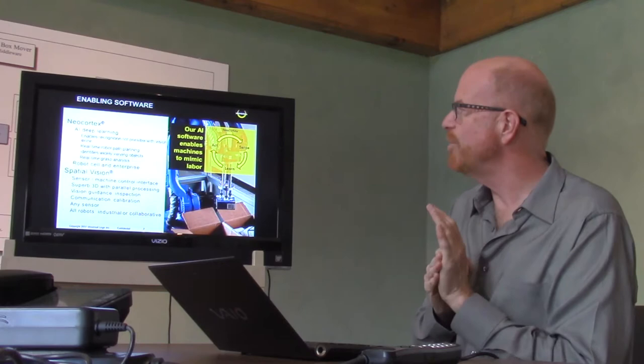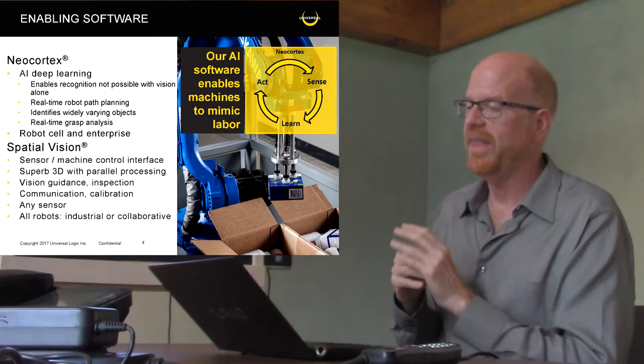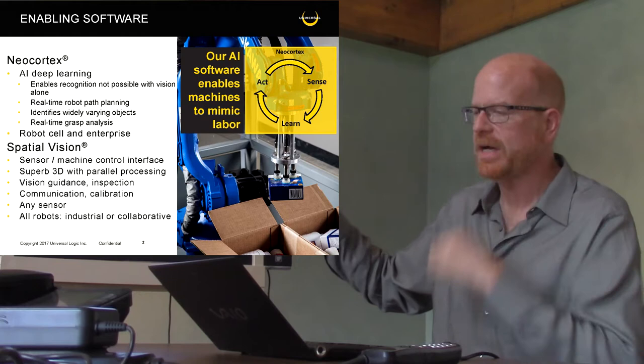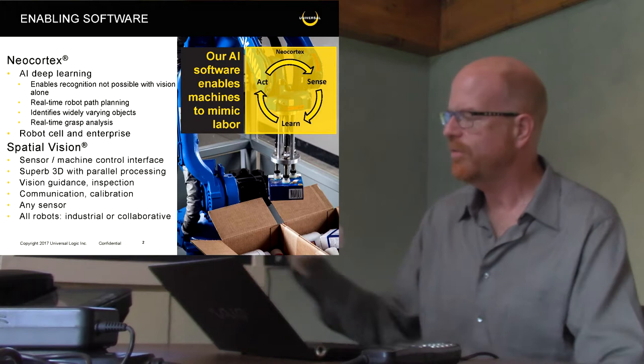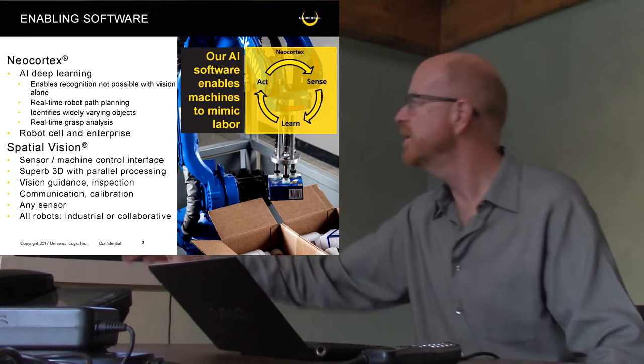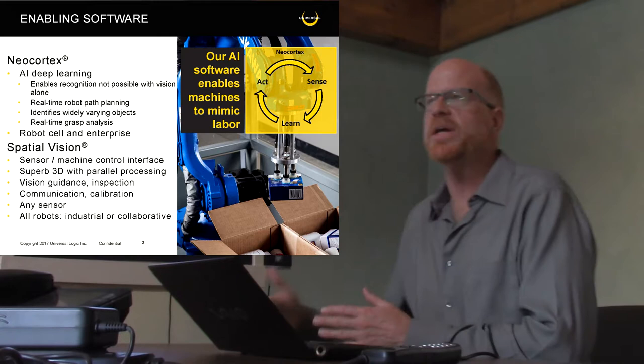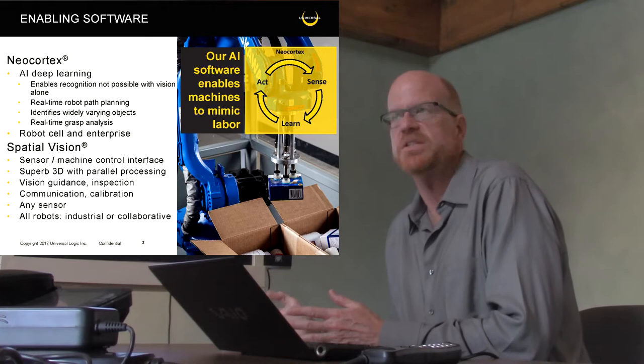We do real-time robot path planning, which I'll show you some videos in a minute. The identification of a wide variety of objects and real-time grasp analysis is state-of-the-art. That is a process whereby you begin to use the data of how a thing has been gathered to drive inference about what you're actually doing. This is absolutely cutting-edge stuff. Is it necessary all the time? Absolutely not. Is it valuable in some cases? Yes.